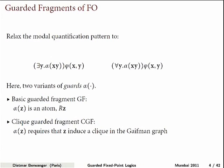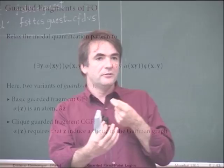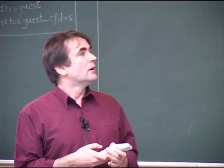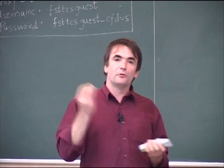We will look at the basic guarded fragment, where the relativization guards are atomic formulas. So we have the relations from the vocabulary plus equality and nothing else. We will also talk about a more general fragment, where the guards — the formulas that tell us how newly quantified variables should relate to the old ones — talk about a generalization of being an atom.